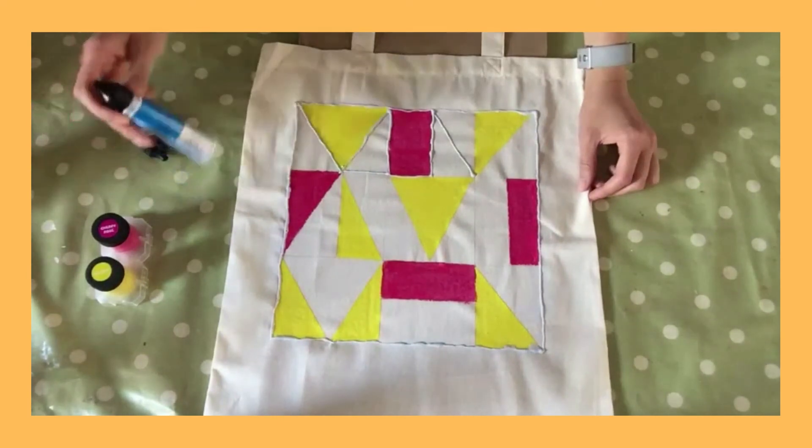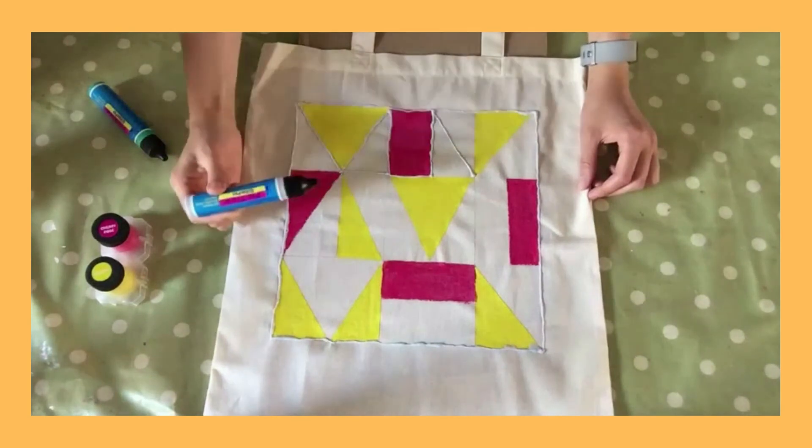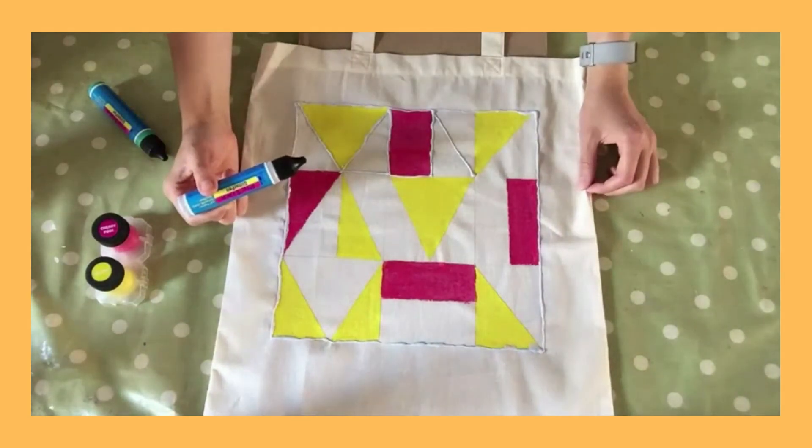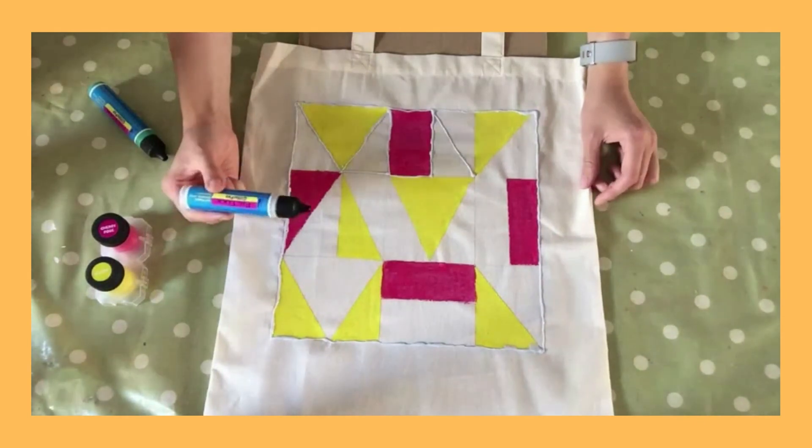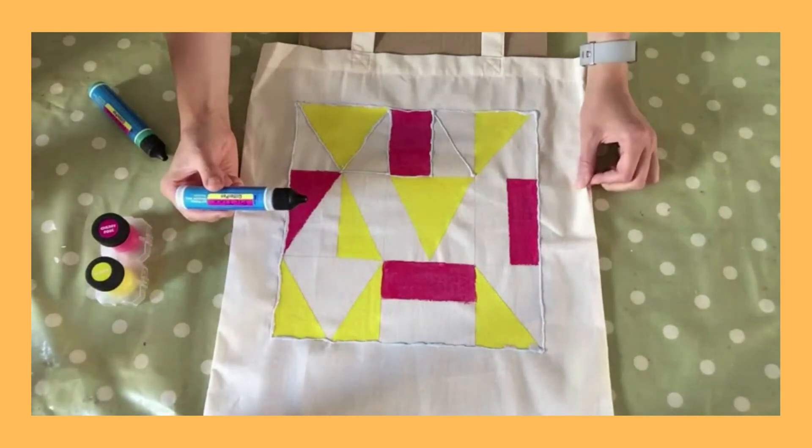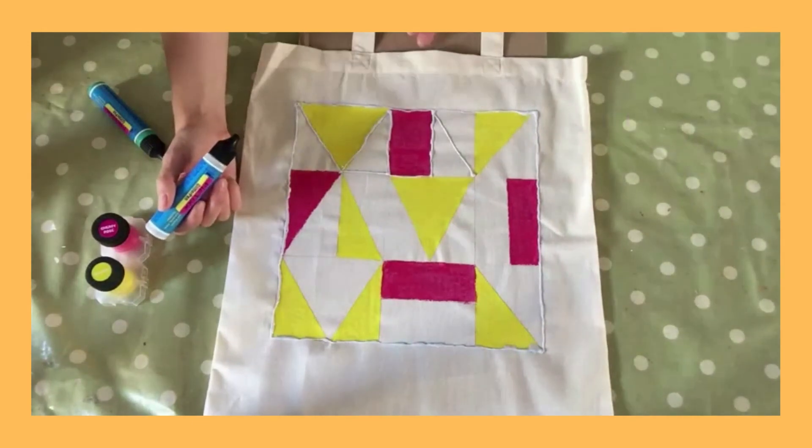And when using the glitter pens as well this must be left to dry for eight hours and when applying make sure you do press lightly onto the fabric and you just seal this by ironing as well on a low setting on the reverse of the fabric again.